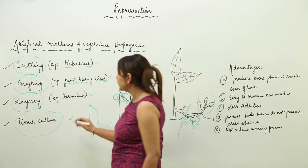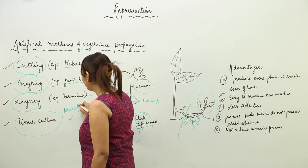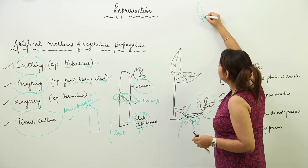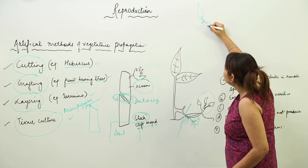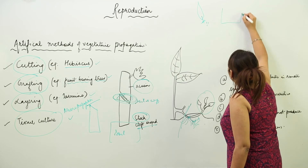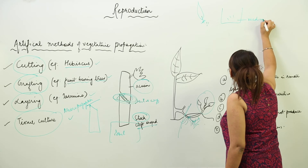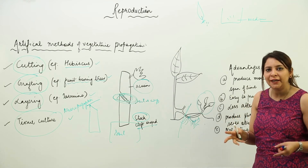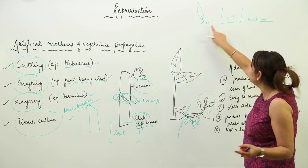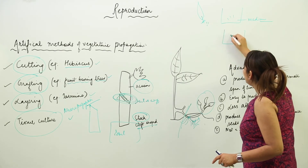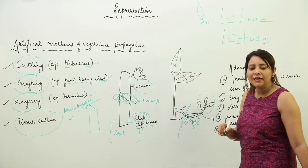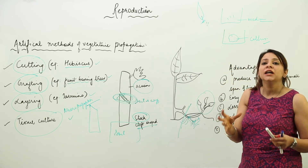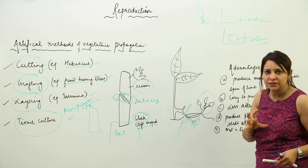The next method is tissue culture, also given the special name micro-propagation. In tissue culture, we isolate a few cells or tissues from a plant leaf and put them into a medium — a medium is where we artificially provide all the nutrition a plant normally takes naturally. In this medium, the tissue will divide and form a structure called callous, which is an unorganized mass of undifferentiated cells.